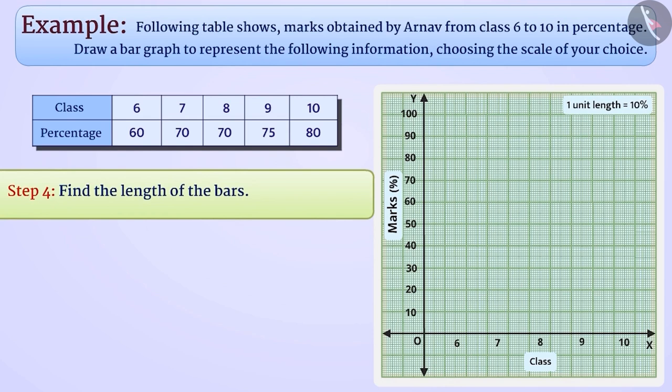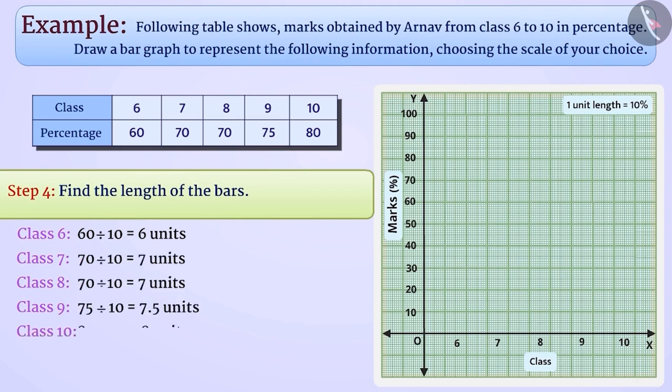Step 4: Next, we will find the length of the bars. For class 6, length of the bar will be 60 divided by 10 is equal to 6 units. In the same way, we can find the length of the bar for class 7, class 8, class 9 and class 10.